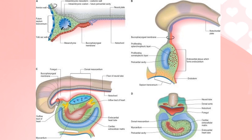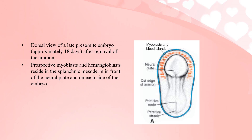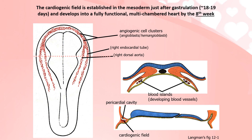This is the dorsal view of the late presomite embryo at approximately 18 days after removal of the amnion. You can appreciate the horseshoe-shaped area formed by myoblasts and hemangioblasts migrating from the primitive streak and primitive node. The cardiogenic field is established in the mesoderm just after gastrulation, at 18 to 19 days.